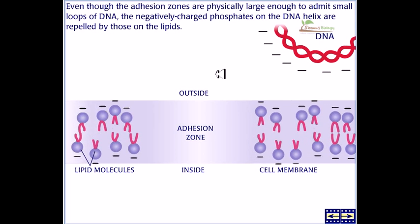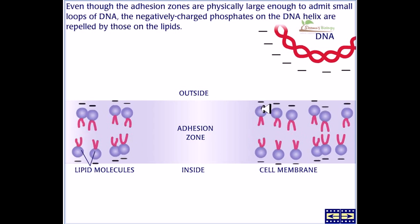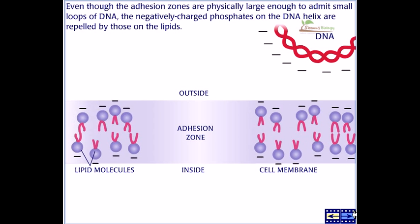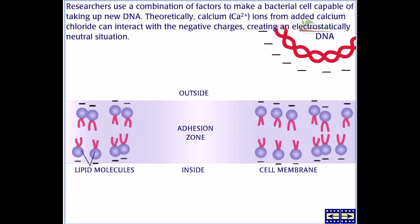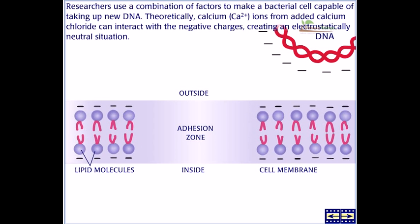This negatively charged DNA will be repelled because of the negative charge of the phospholipid, the negative charge of the phosphate groups that are present in these lipids. Researchers use a combination of factors to make a bacterial cell capable of taking up new DNA.